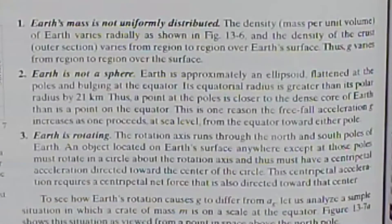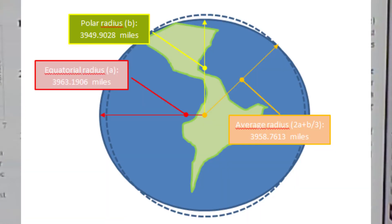Number two, Earth is not a sphere. Earth is approximately an ellipsoid flattened at the poles and bulging at the equator. Its equatorial radius is greater than its polar radius by 21 kilometers. Thus, a point at the poles is closer to the dense core of Earth than is a point on the equator. This is one reason that the freefall acceleration, g, increases as one proceeds at sea level from the equator toward either pole.